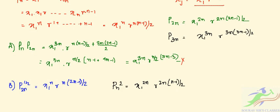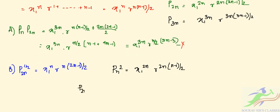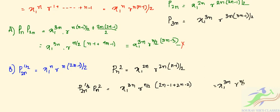Now multiplying P(2n)^(1/2) and P_n^2, we get X_1^(3n) · R^(n/2 · (2n-1 + 2n-2)), which simplifies to X_1^(3n) · R^(n/2 · (4n-3)). Comparing with P(3n), we have 4n-3 here versus the required exponent for P(3n), so this option is also incorrect.